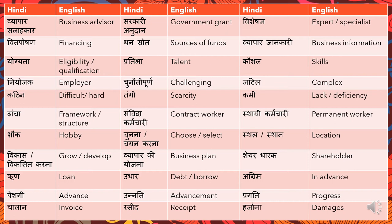In that case, 'business structure' would be 'vyapari dhancha.' 'Sammida karmichari' means 'contract worker' — sammida is 'contract.' 'Thai karmichari' is a 'permanent worker.' 'Shauk' means 'hobby' — in a dialogue it appeared as 'I developed this as a hobby and now I want to transfer it into a business.' 'Chunna' means 'to choose' and 'chayan karna' means 'to select.'